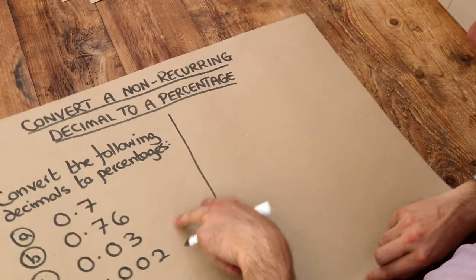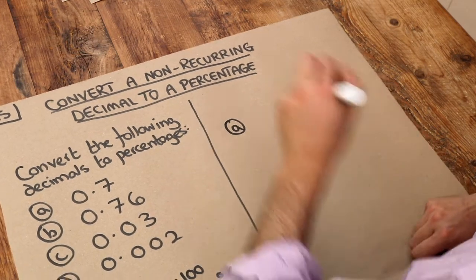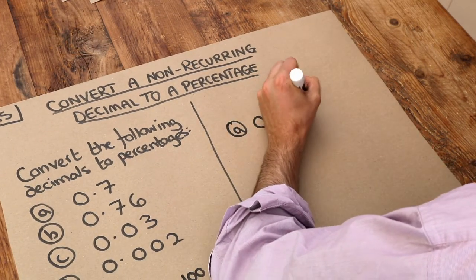So let's do that for these four examples here. If you want 0.7 as a percentage, we do 0.7 times 100.